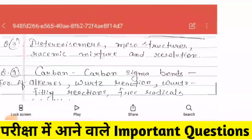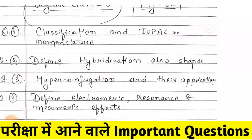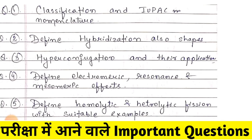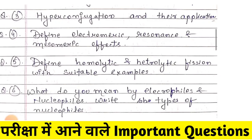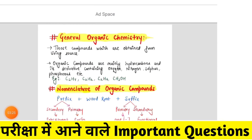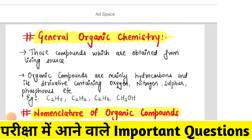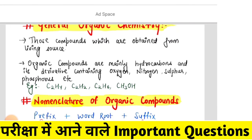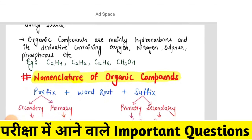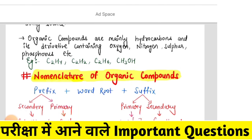Let's show you some related questions from the first classification. Question number one, two, three, four, five — you have to clear at least up to question six. Now, general organic chemistry: those compounds which are obtained from living sources. Organic compounds are mainly hydrocarbons, and their derivatives contain oxygen, nitrogen, sulfur, and phosphorus.